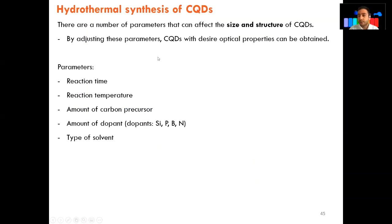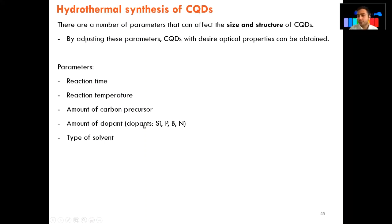Same as other methods, the size and structure of carbon quantum dots can be adjusted by the synthesis parameters: reaction time, reaction temperature, amount of carbon precursors, amount of dopants we can add, and the type of solvent. We can use other solvents besides water, but because we're aiming to use them for biological applications, water is the best choice.